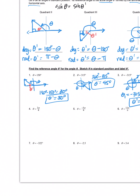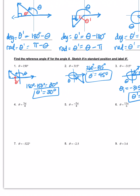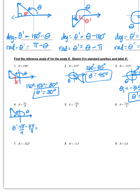Number four: 3π/4, in radian mode. 3π/4 falls in quadrant two, so theta prime is inside that triangle. The quadrant two rule says theta prime equals pi minus 3π/4. Getting a common denominator gives 4π/4 minus 3π/4, so theta prime equals π/4.